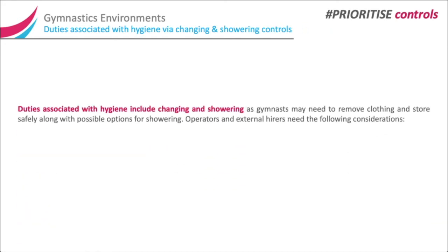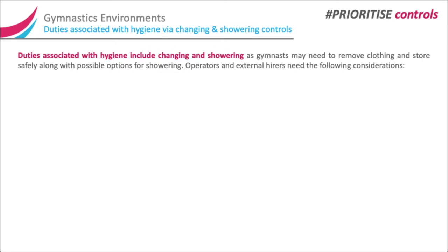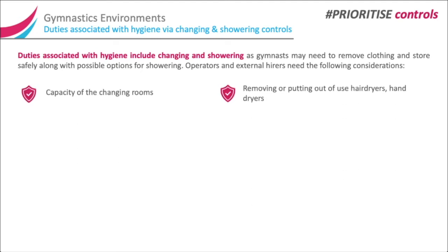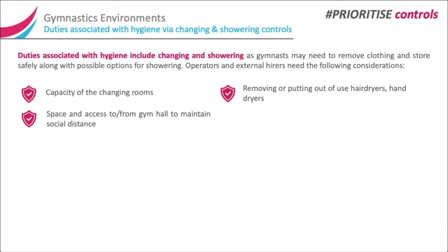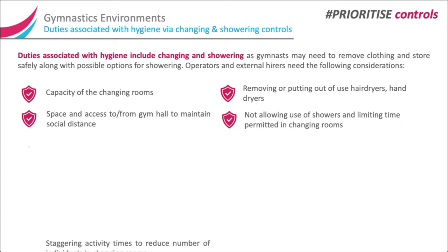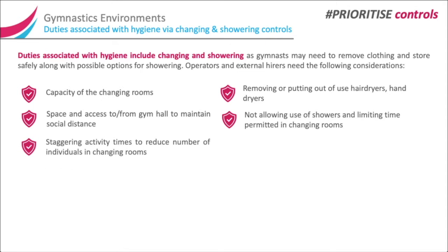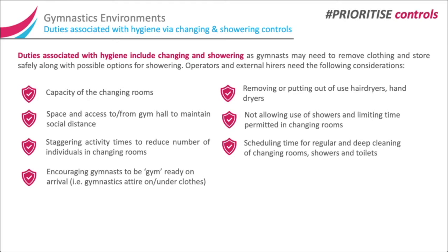Duties associated with hygiene via changing and showering controls. Gymnasts may need to remove clothing and store safely, along with possible options for showering. Operators and external hirers need to consider: capacity of the changing rooms; removing or putting out of use hair dryers and hand dryers; space and access to and from the gym hall to maintain social distance; not allowing use of showers and limiting time permitted in changing rooms; staggering activity times to reduce the number of individuals in changing rooms; and scheduling time for regular and deep cleaning of changing rooms, showers and toilets.